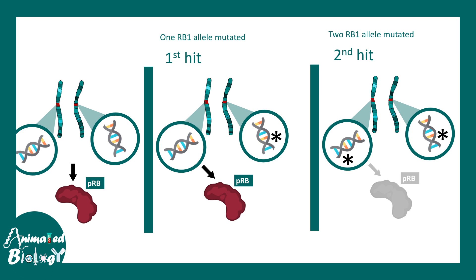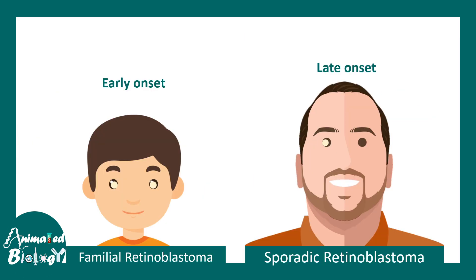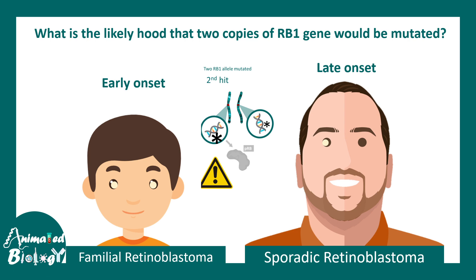The probability that both alleles are mutated is lower than just one being mutated. In familial retinoblastoma, one mutated copy is already inherited, so the likelihood that the second copy becomes mutated is high, leading to early onset. In sporadic retinoblastoma, both alleles are functional at birth, and two independent mutations must be acquired over time, which is why sporadic forms have a later onset and are less common than familial cases.